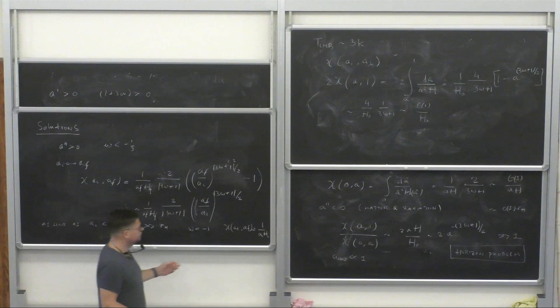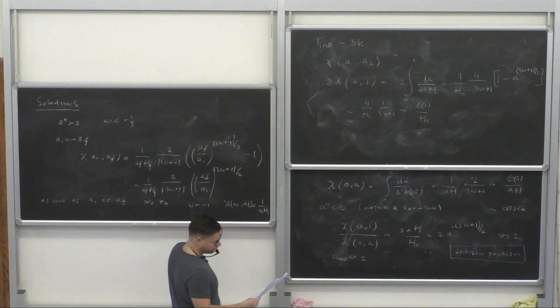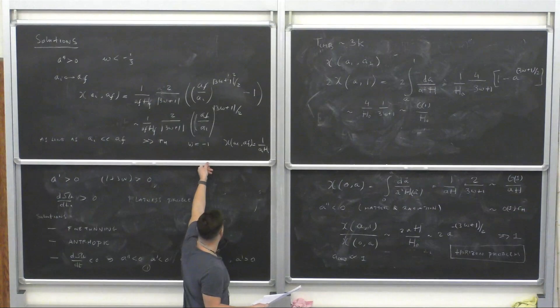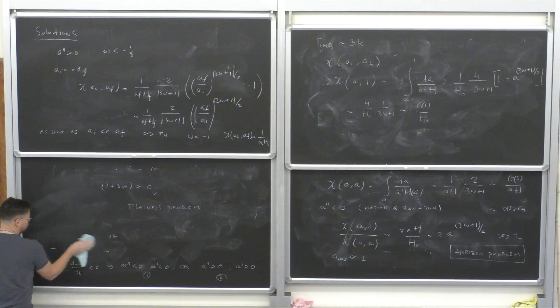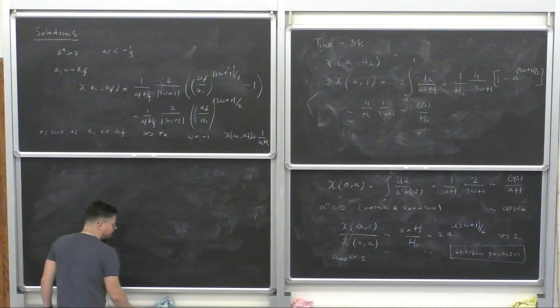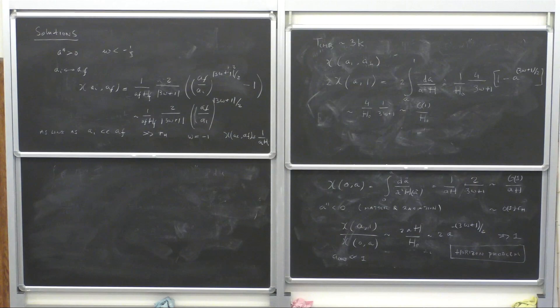So accelerated expansion saves the day. This — combined with the absence of magnetic monopoles and topological defects — led people in the 1980s, including Linde, Guth, and Starobinsky, to propose inflation to solve these problems.